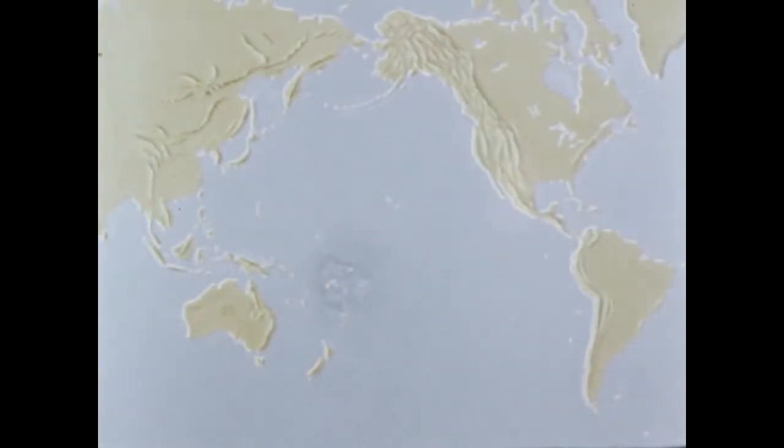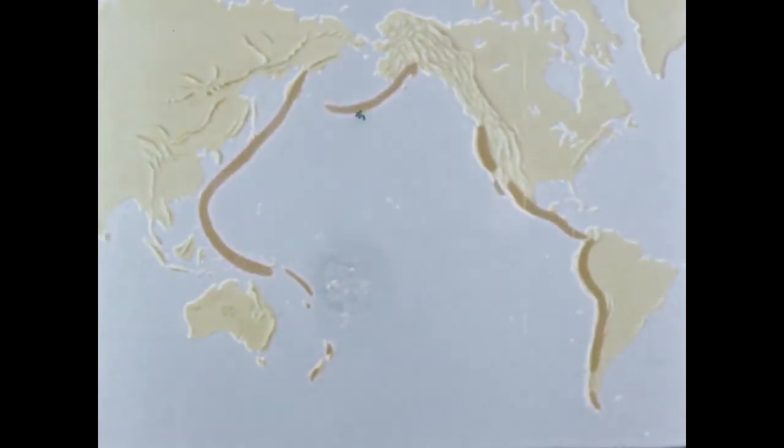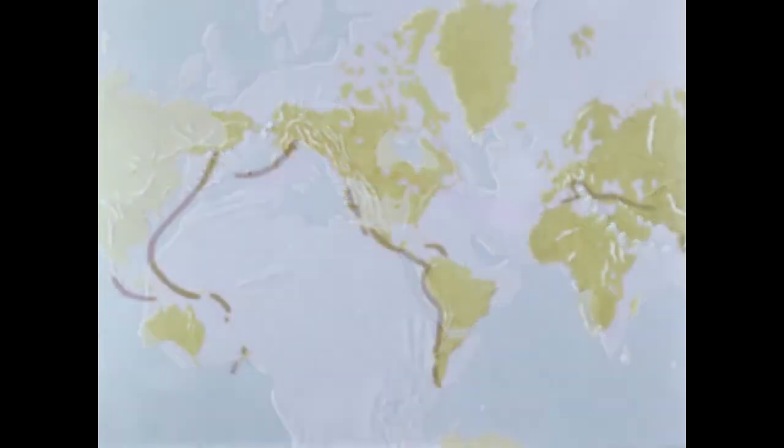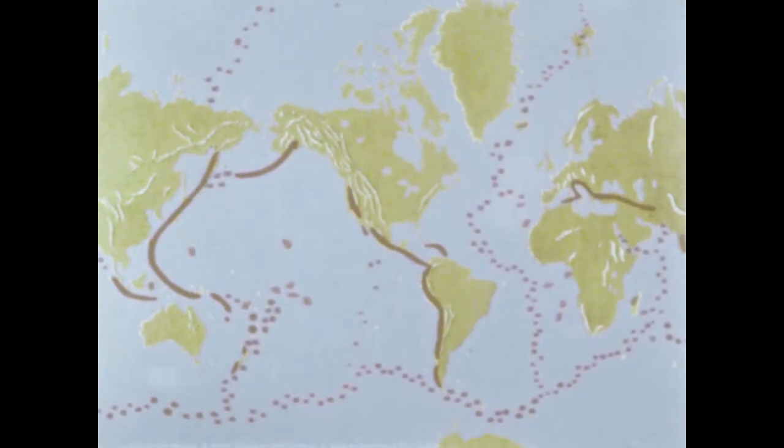Many active volcanoes are found lining the great basin of the Pacific, forming a great circle of fire. Active volcanoes are also found along the mountainous edges of many continents, and on islands and mountains building from the floor of the world's oceans.